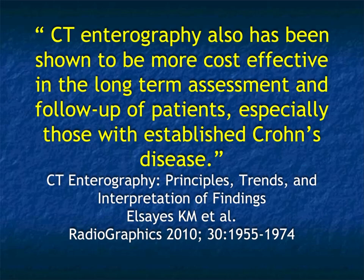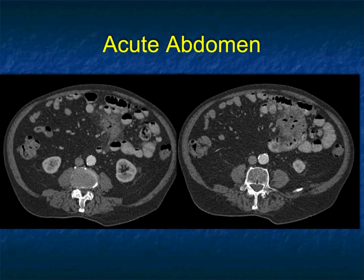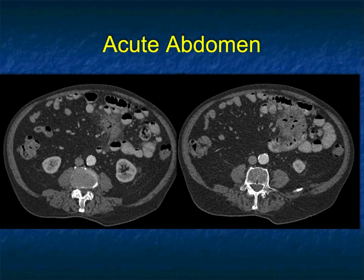CT enterography in Crohn's patients — whether evaluating for obstruction or other causes — has very high sensitivity and is very cost-effective. There are other things in terms of non-neoplastic but inflammatory diseases that cause small bowel obstruction. Let's stop here and come back for Part 5. I don't think we've ever done a five-parter before, but this will be a five-parter. Come back in a few minutes for the fifth and final part.